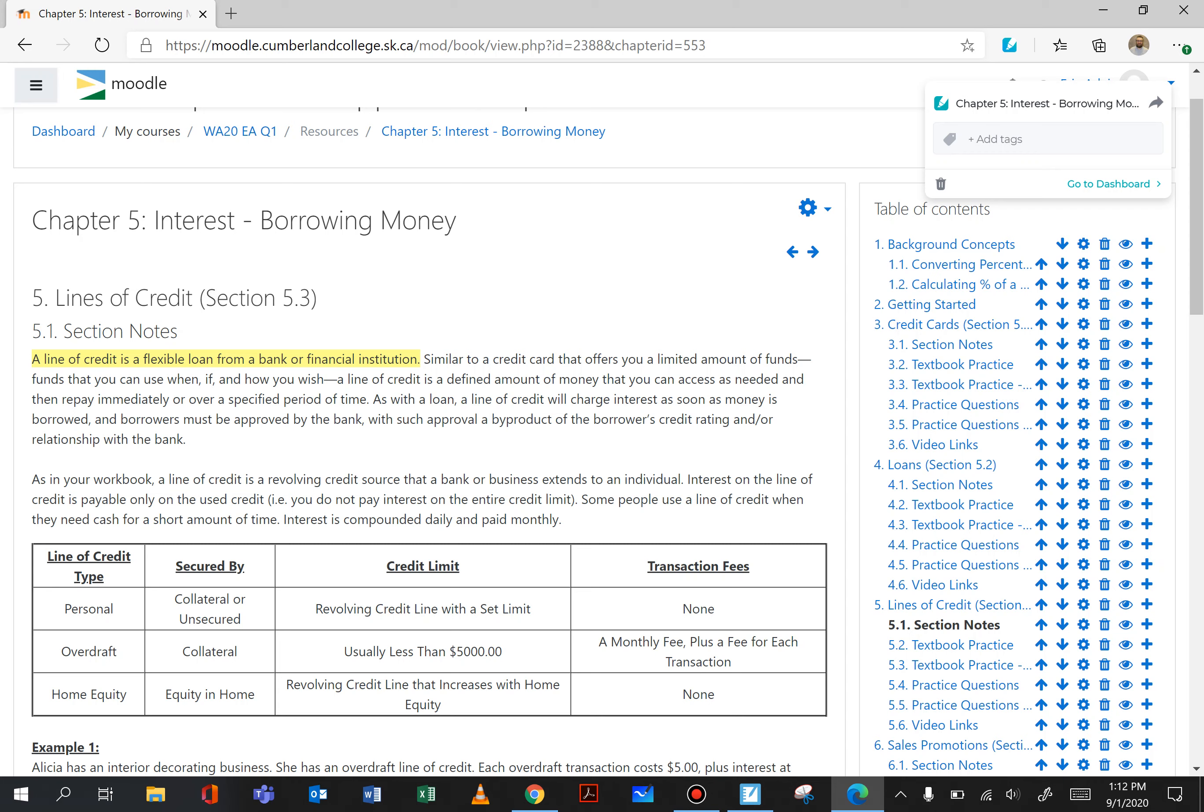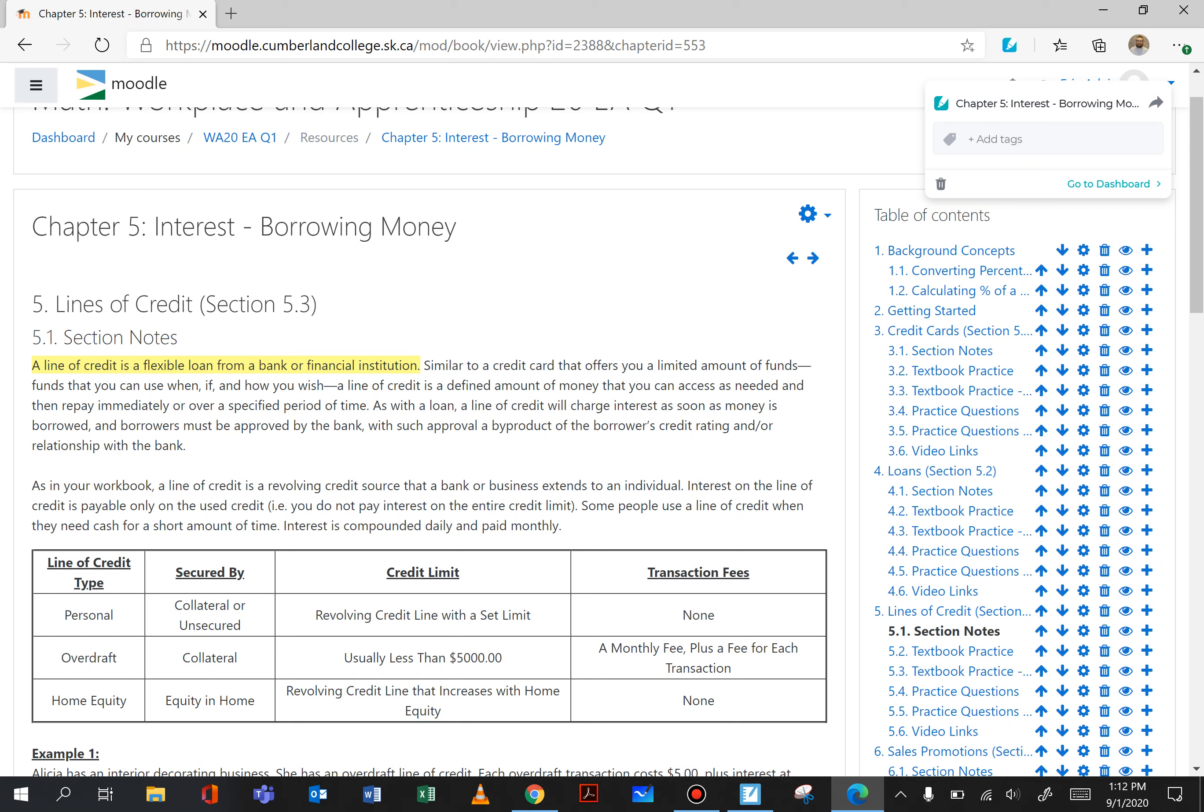Now if you have a line of credit for five thousand dollars that means you could access five thousand dollars. That means you could only access 200 if that's all you needed and you only pay interest on the amount of money that you use. So a line of credit will charge interest as soon as money is borrowed. If you borrow none or if you use none of that line of credit you do not get charged interest.